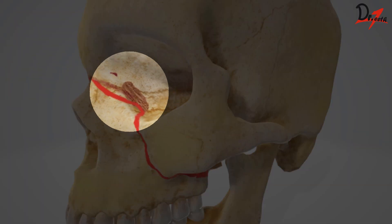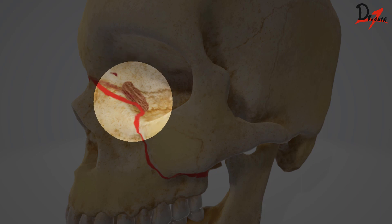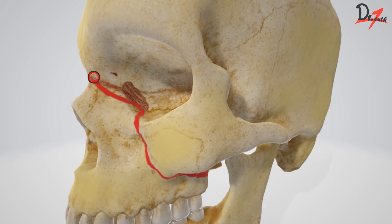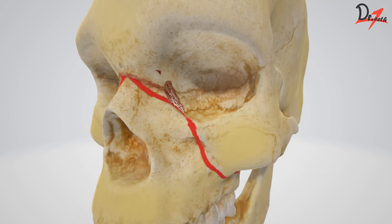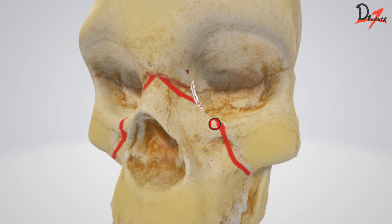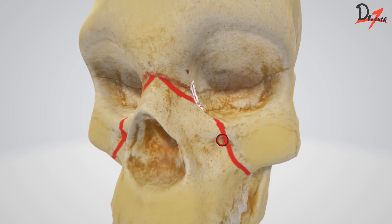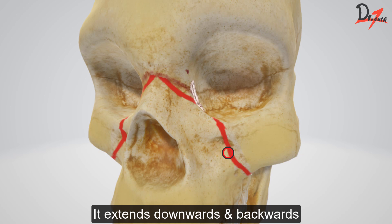Here in brown you can see the lacrimal bone. So after crossing the frontonasal junction, the fracture line reaches the medial wall of the orbit, where it crosses the lacrimal bone. Then it crosses the infraorbital margin. It turns slightly medial to the infraorbital foramen, or passes through the infraorbital foramen. Here we have the infraorbital foramen — in this case it is passing right through it.